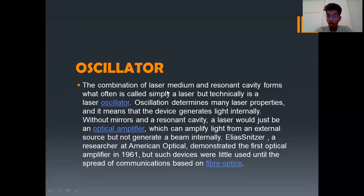What is an oscillator? The combination of laser medium and resonant cavity forms what is often called simply a laser, but technically it is a laser oscillator. Oscillation determines many laser properties and it means that the device generates light internally. Without mirrors and resonant cavity, a laser would be just an optical amplifier which can amplify light from an external source but not generate a beam internally. Elias Nadezer, a researcher at American Optical, demonstrated the first optical amplifier in 1961, but such devices were little used until the spread of communications based on fiber optics.